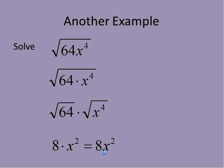If we take 8x squared and we square it, you get 64x to the power of 4. So that's an example where we have the square root of a perfect square.